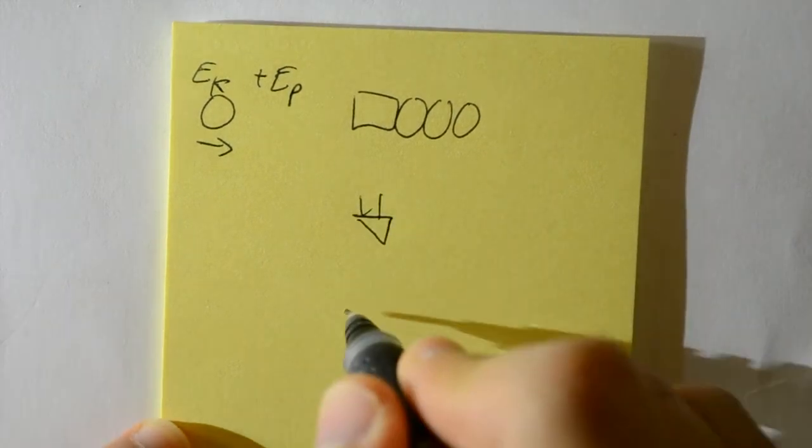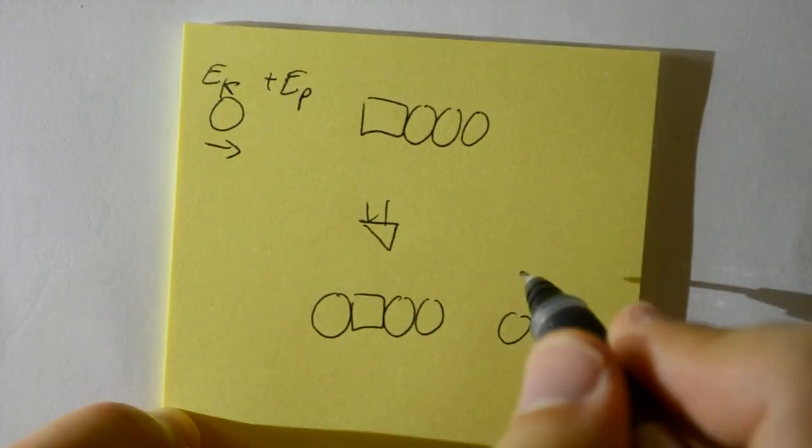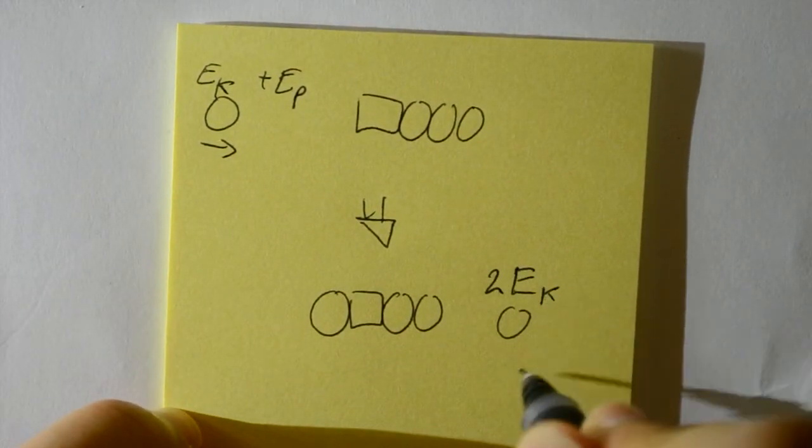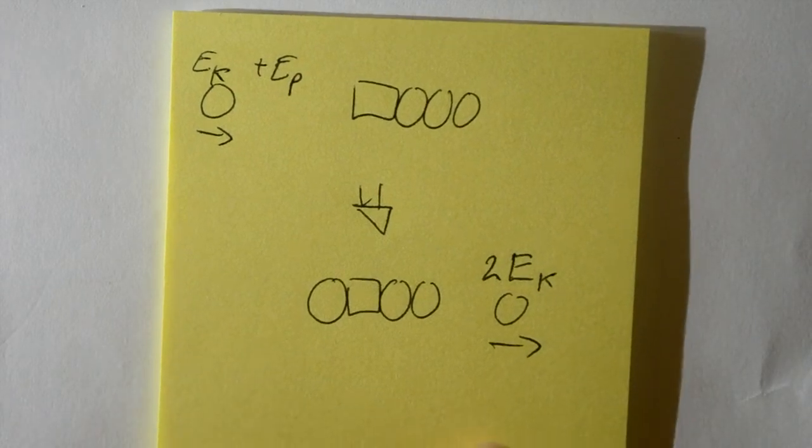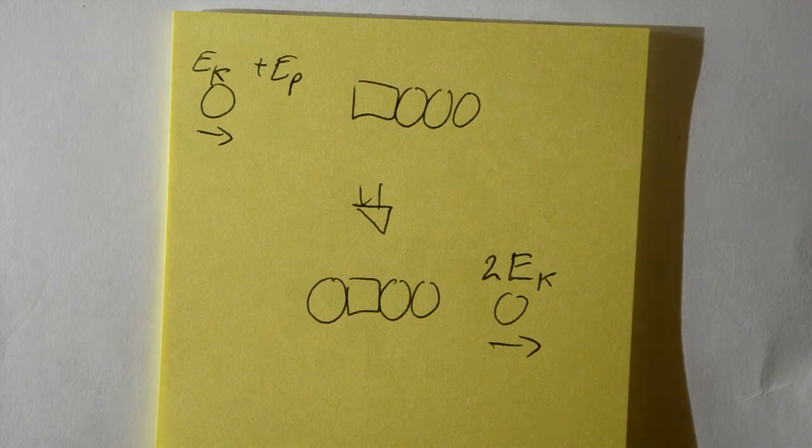Then the same steps from before are repeated and a new ball is ejected with even more energy than the first. And these steps repeat for each magnet, giving more and more energy to the final ball bearing.